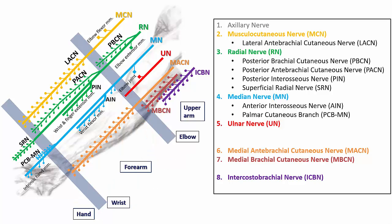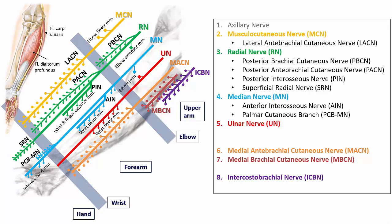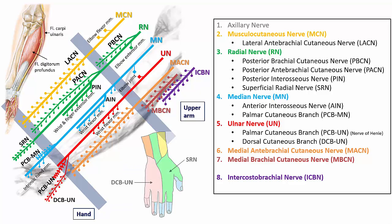The ulnar nerve similarly travels through the forearm and innervates flexor carpi ulnaris and the medial portion of flexor digitorum profundus, again without giving off any cutaneous branches. Proximal to the wrist crease, it gives rise to two cutaneous branches that innervate the hand: a palmar cutaneous branch, sometimes also called the nerve of Henle, which innervates the medial aspect of the palm; and the dorsal cutaneous branch of the ulnar nerve, which innervates the dorsal aspect of the hand and fingers. The ulnar nerve continues into the hand to innervate the majority of the intrinsic muscles of the fingers.